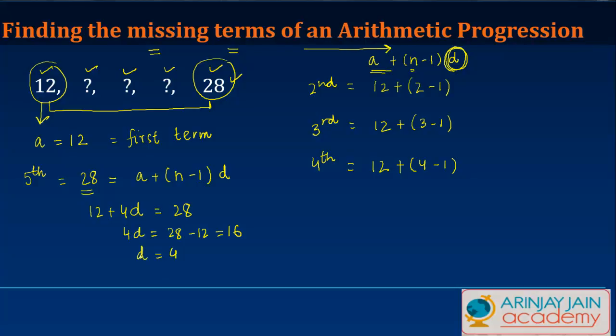Once I know the value of d I just need to plug it in the second, third and fourth term at the respective places. I'm just going to write the answers. 2 minus 1 is 1, 1 times 4 is 4, 4 plus 12 gives you 16, so the second term is 16.